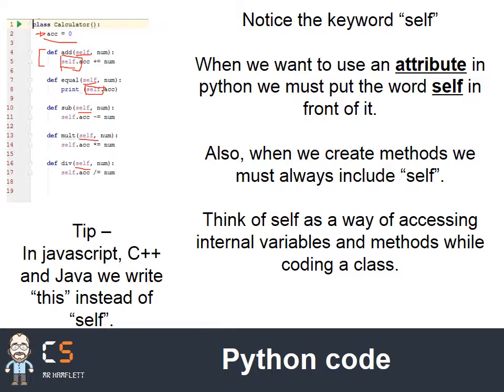In JavaScript, C++ and Java and other languages of that ilk, the keyword is 'this' rather than 'self'. In the exam, you're more likely to see the word 'this' rather than 'self', but they're effectively interchangeable. So if you see the word 'this', it really means self. And in Python we use self.